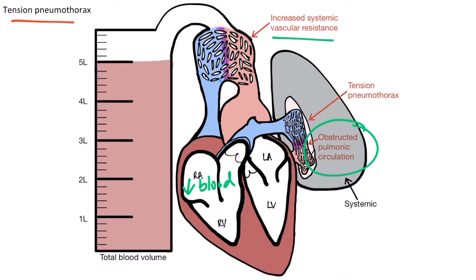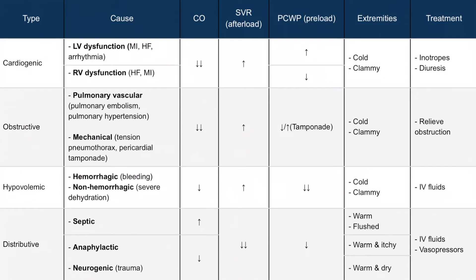Similarly, in cardiac tamponade, the increased pressure around the heart prevents blood from entering it. Cardiac output will be decreased and systemic vascular resistance will be increased. In the case of pulmonary vascular causes, right ventricular failure occurs due to a hemodynamically significant pulmonary embolism or severe pulmonary hypertension. The pulmonary vascular resistance is so great that the heart is unable to generate enough pressure to overcome the obstruction. This increases the pressure in the right atrium and consequently decreases preload, meaning there will be a decrease in pulmonary capillary wedge pressure. The only exception is cardiac tamponade, where there will be an increase in pulmonary capillary wedge pressure.